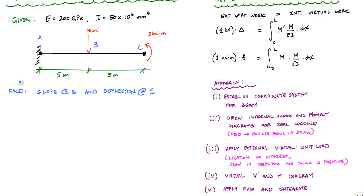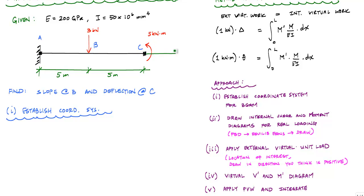The first thing I'm going to do is establish a coordinate system for my beam structure. Some people like to skip this step because they just want magnitudes of displacements and rotations, but I like to have it to put everything in context. I'll put the origin at point A, with positive x going to the right, and any positive deflections considered upward.